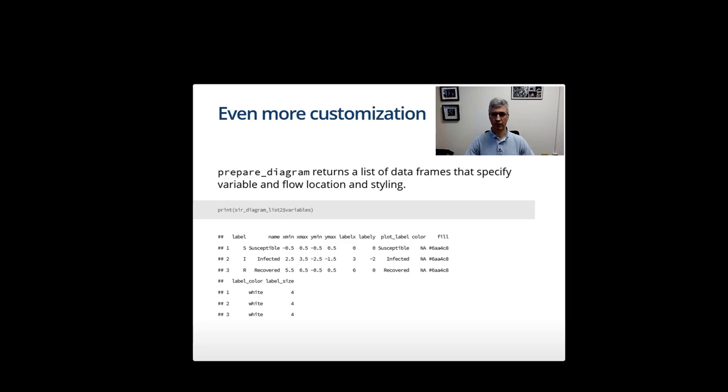Here we're just showing the one for variables. This data frame specifies the locations of the boxes and the labels, the colors, and other styling elements, and the same for the flows. Since it's just a simple data frame you can now address specific elements and change them.